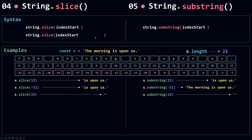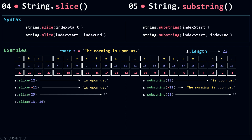Now let's talk about the second parameter for slice and substring: the index end. You can choose both an index start and an index end for the section you want to extract. For example, passing 13 and 16 — slice starts at 13, which is included, but 16 is not included, so we get 's', space, and 'u'. Substring behaves the same way and returns the same result.